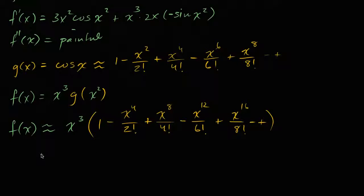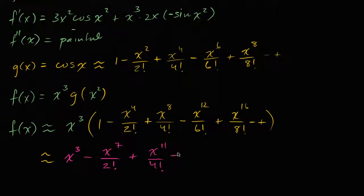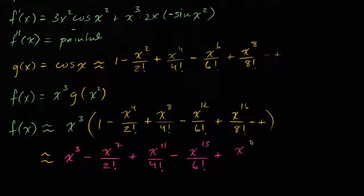Now we distribute the x to the third — let's do it in magenta — and we get: x to the third, minus x to the seventh over two factorial, plus x to the eleventh over four factorial, minus x to the fifteenth over six factorial, plus x to the nineteenth over eight factorial. That's the first five non-zero terms, and we are done.